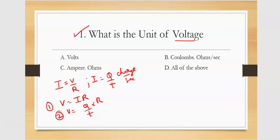Before deciding a unit of voltage, we have options. A option is volts. B option is different — coulombs, ohms per second. C option is ampere ohms, and D is all of the above.